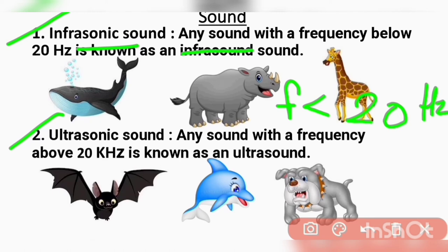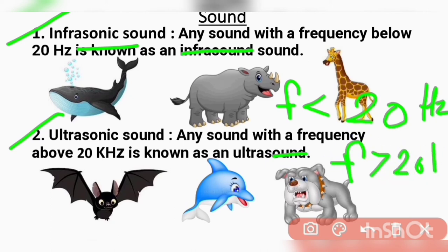Next is ultrasonic sound. Any sound with a frequency above 20 kHz is known as ultrasonic sound. The examples of ultrasonic sounds are bat, dolphin, and dog — they can hear frequencies above 20 kHz. These are the examples of ultrasonic sounds.